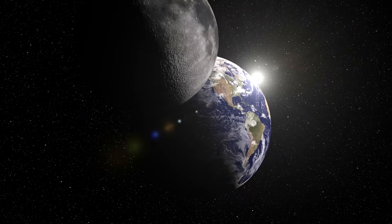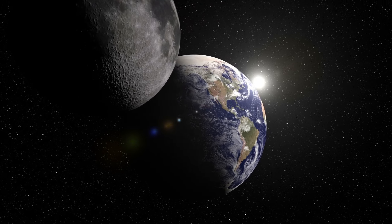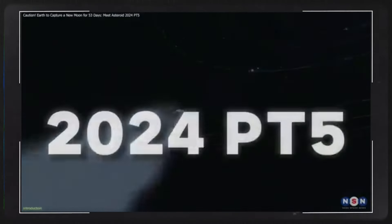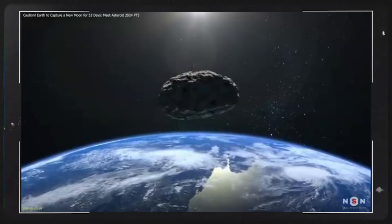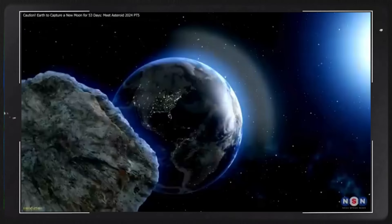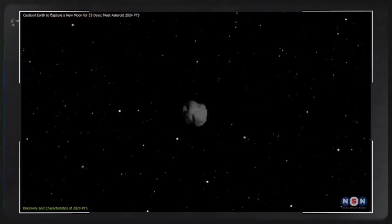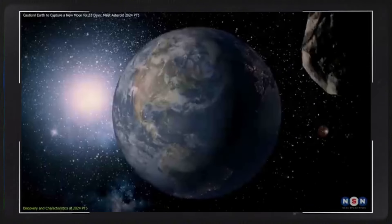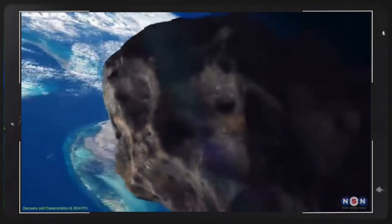However, unlike our well-known and much larger moon, this natural satellite is significantly more compact. The asteroid, officially named 2024 PT5, measures just 10 meters in diameter, about the size of a bus. Yet despite its small stature, it has captured the attention of astronomers. For a brief period of approximately two months, this asteroid will be held by Earth's gravity before it eventually breaks free and resumes its journey through space.